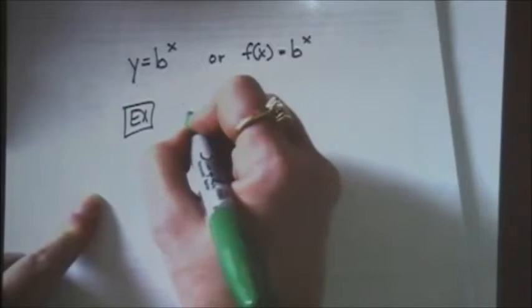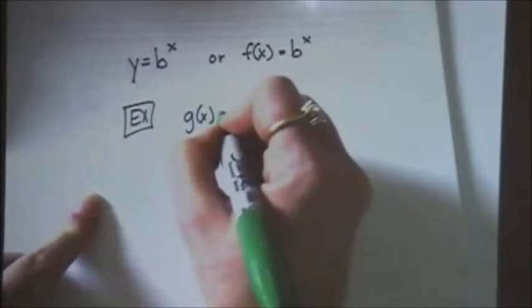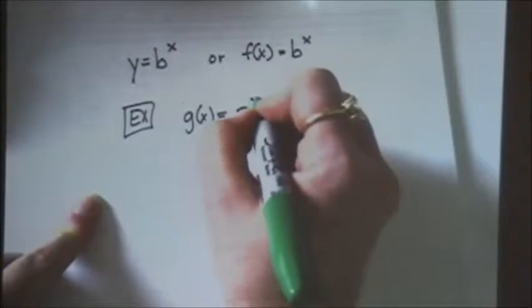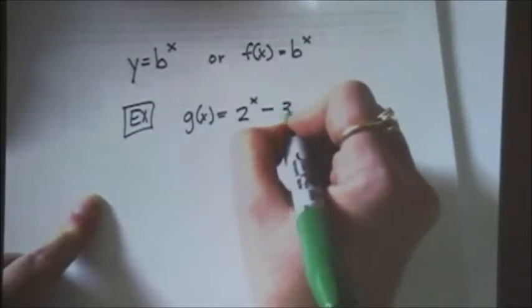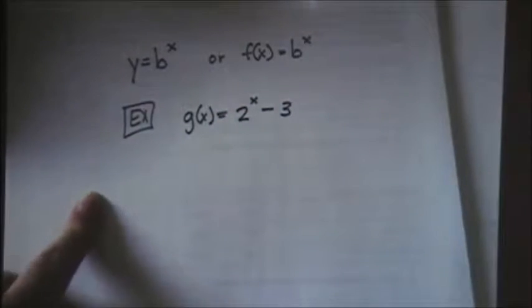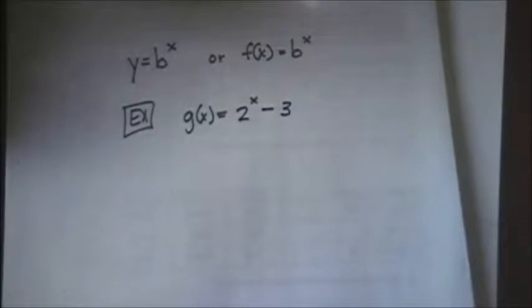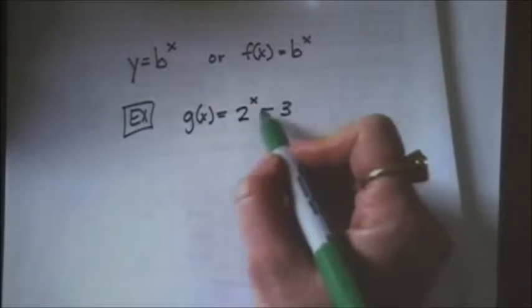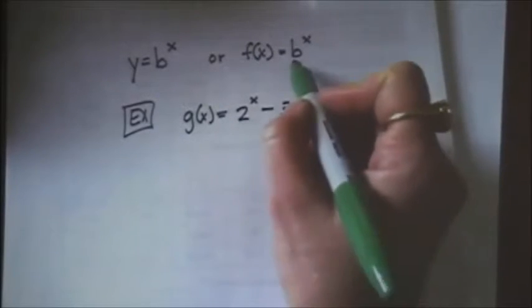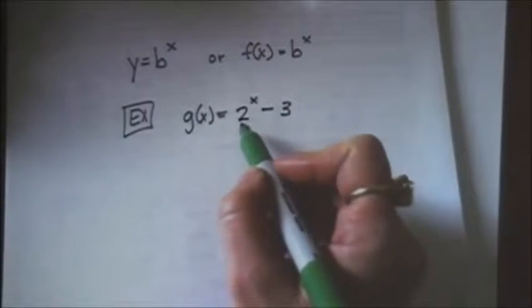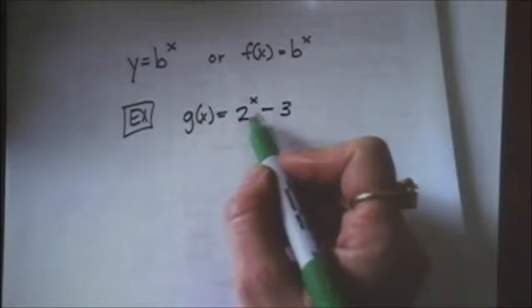it will give you g of x equals 2 to the x power minus 3, and ask you what is happening to this particular graph. Well, this one is being shifted down 3. 2 is the base, and so it doesn't necessarily change the graph any.